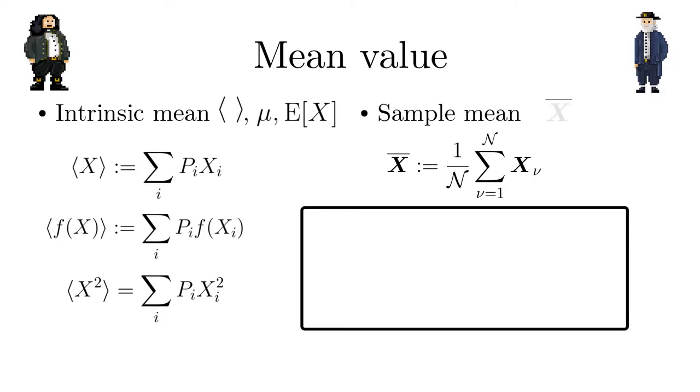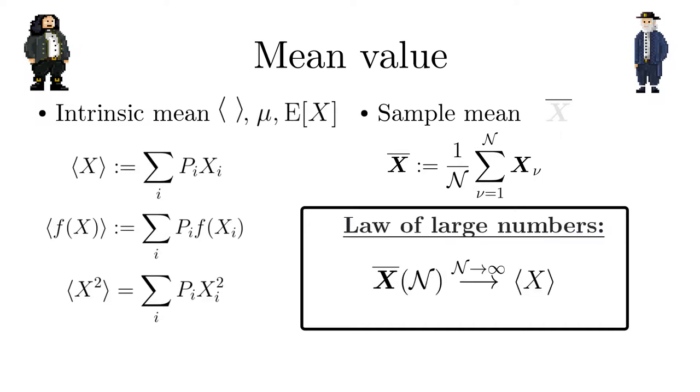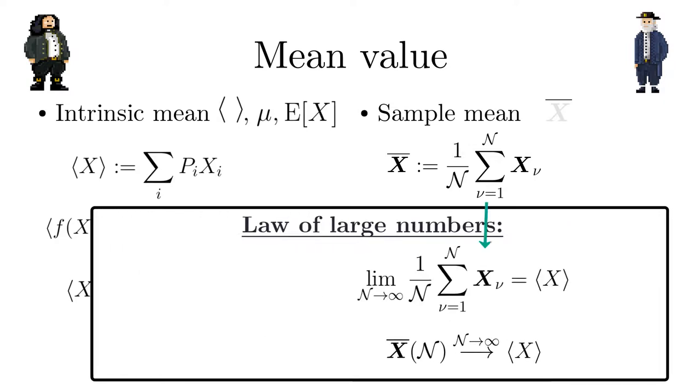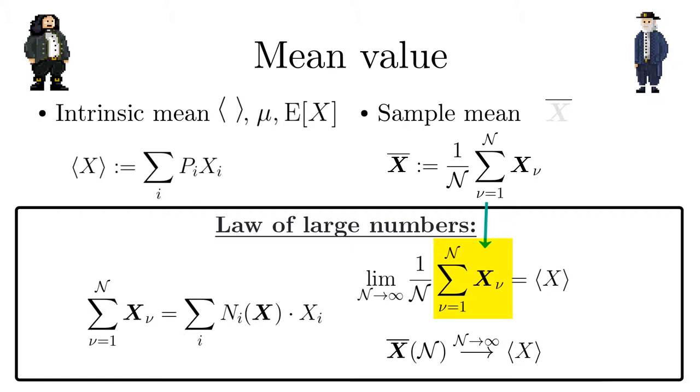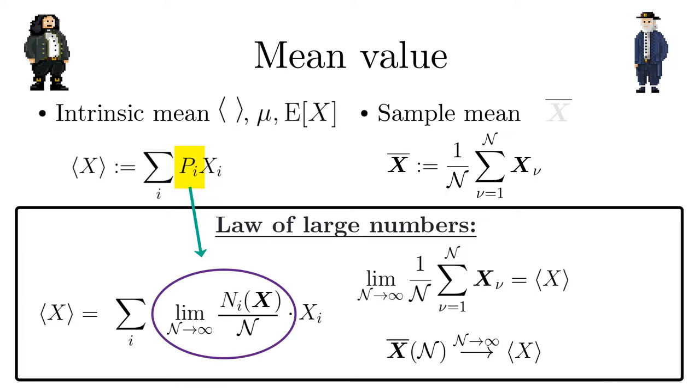Now we turn to the first part of the law of large numbers. It states that the sample mean converges to the intrinsic mean when the sample size n approaches infinity. From this relation, we can also derive the frequentist definition of probabilities, namely as relative frequencies in the limit of infinitely large sample size.